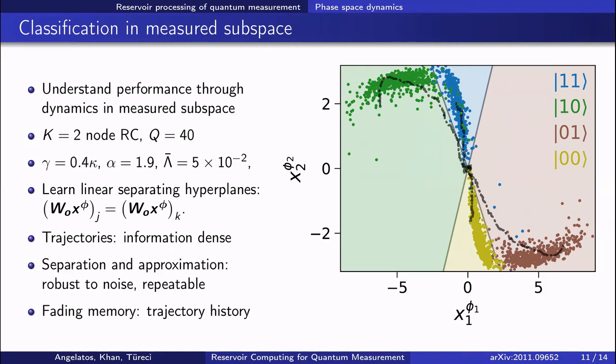This is actually the key to the rapid training shown earlier. These trajectories are information dense, with each time point equivalent to a new sample in training, and so these separating hyperplanes can be drawn reasonably well with just a few trajectories.